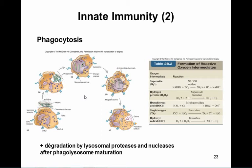TLR2 and TLR4 are not directly responsible for phagocytosis, but they activate neutrophils. If these receptors are bound, phagocytosis will be more active and neutrophils will be much more efficient at killing bacteria once they have been internalized.